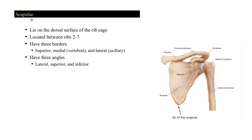The scapula lies on the dorsal surface of the ribcage — on the posterior side on either side of the vertebral column — located between the 2nd and 7th ribs. It has three borders: the superior border, the medial (vertebral) border, and the lateral border. On the lateral side there is a cavity known as the glenoid cavity, where the head of the humerus joins to form the shoulder joint.